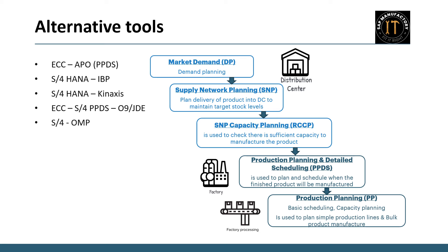Integration of ECC with S/4 PPDS — referred to as the PPDS sidecar — maintains core SAP functionalities in ECC, with S/4 exclusively handling PPDS functions. Numerous alternative tools such as O9, JDE, or Anaplan are available for demand planning and SNP. In the last scenario, S/4 integrated with OMP, core SAP functionalities reside within S/4 while OMP handles demand planning, supply network planning, and detailed scheduling. Feel free to share additional tools in the comment section.